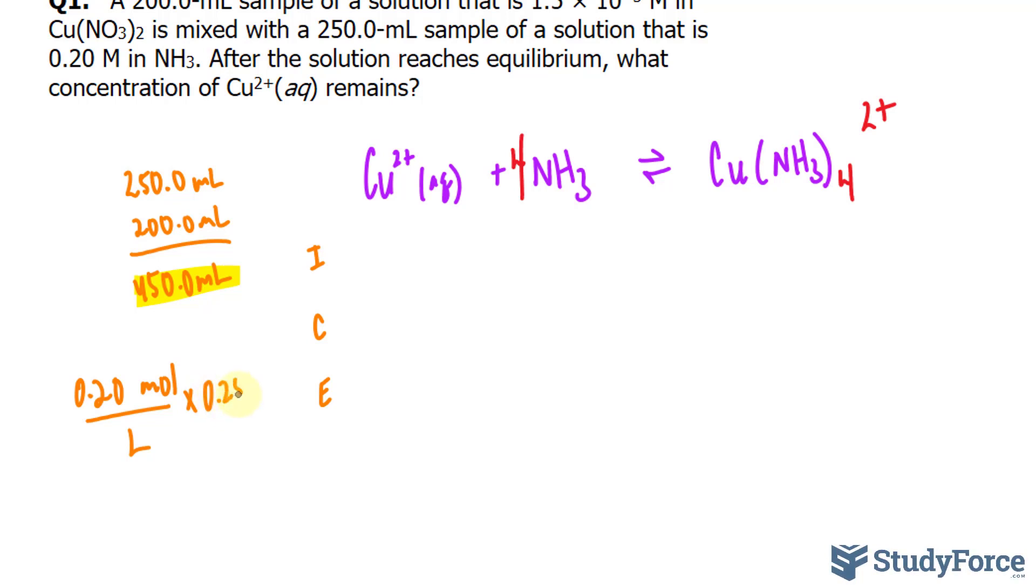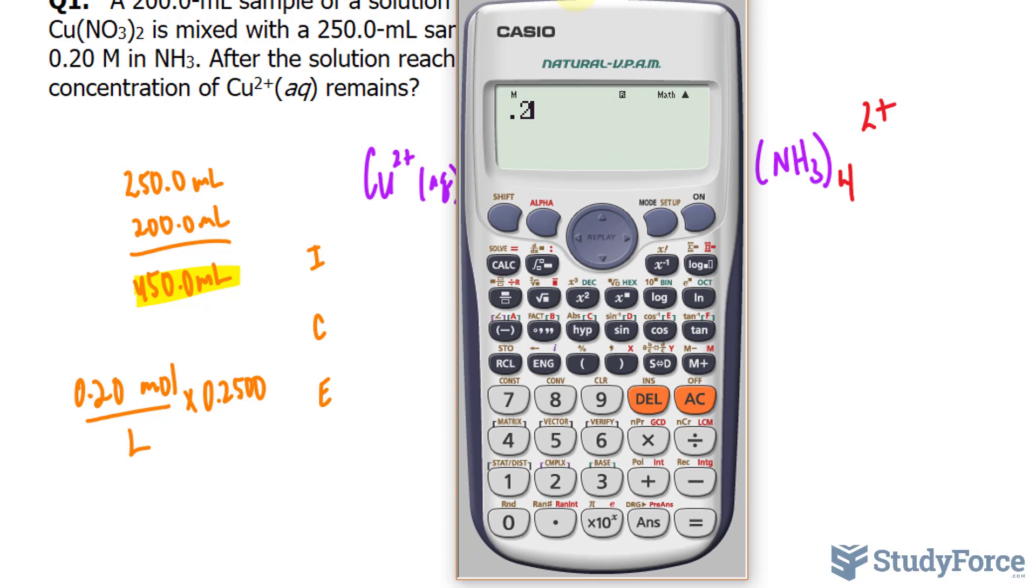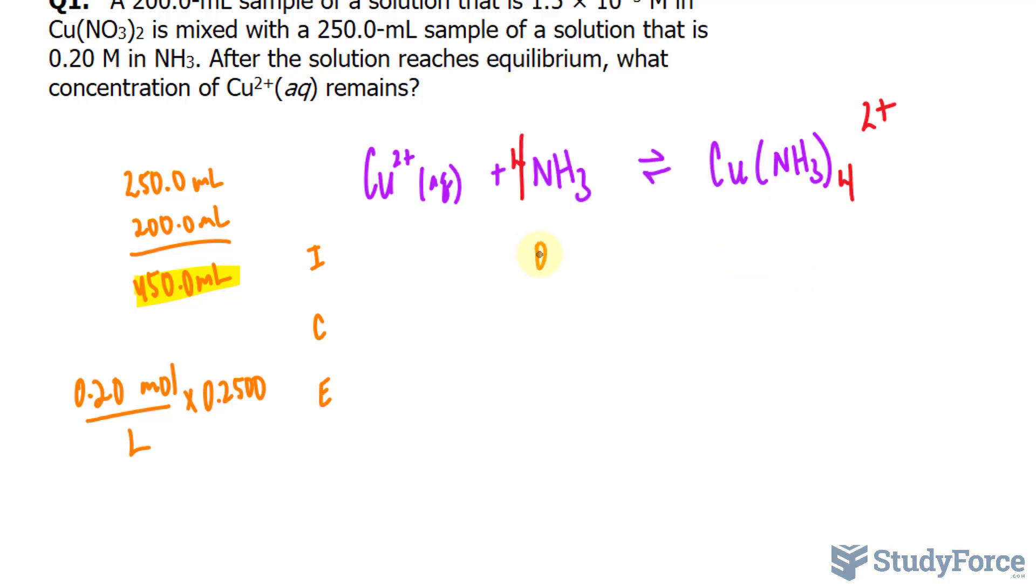In liters, it's this number. Let's find out what that number is. And now the new concentration of NH3 is 0.11 to two significant figures.